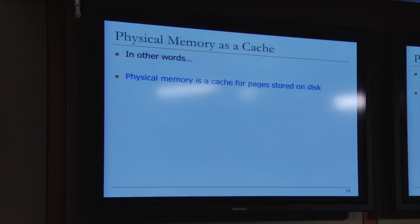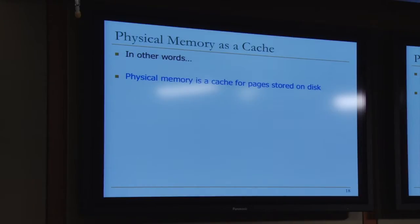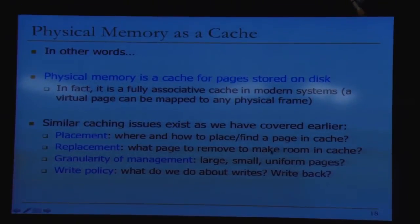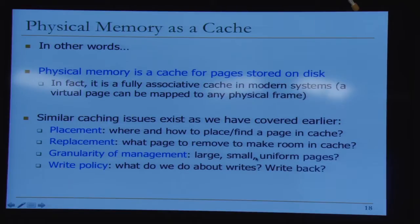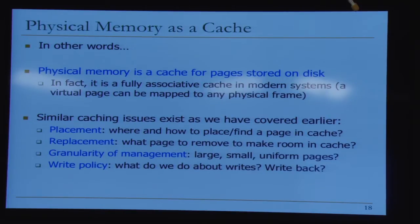Similar caching issues apply: where to place or find a page, what page to replace, granularity of management (large vs. small pages), and write policy — physical memory is almost always write-back, since the disk is so far away. Supporting virtual memory requires both hardware and software. For every memory access, you need to do translation, and if that translation requires accessing a huge table in memory, you access memory twice for each access. To speed this up, page tables in memory are cached in special hardware structures called translation look-aside buffers (TLBs), which cache recently used page table entries.